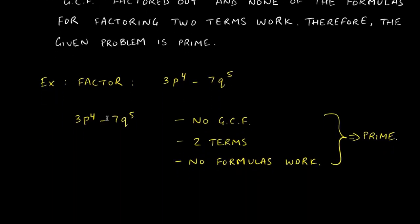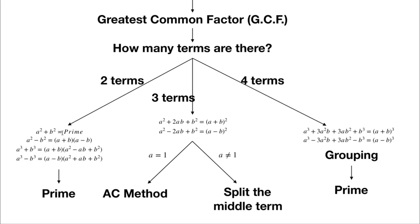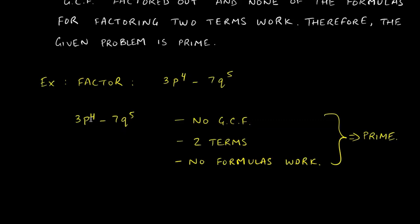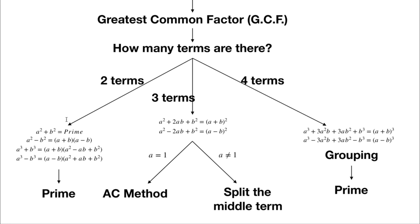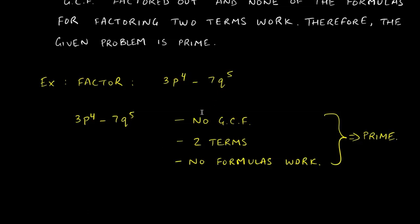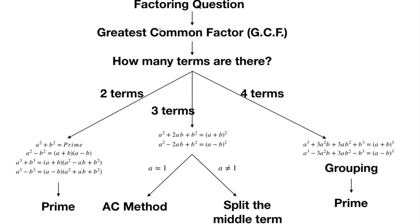Another example: 3p⁴ − 7q⁵. There's no GCF — 3 and 7 share nothing, and the variables don't overlap. With two terms, we try the formulas: it's not a difference of squares (can't take the square root of 3 or 7, and these aren't perfect squares); not a sum of cubes (it's a difference); not a difference of cubes (can't take the cube root of 3 or 7). So this expression is prime.